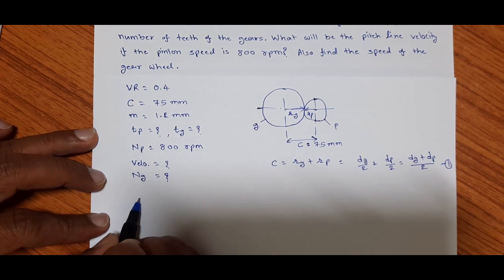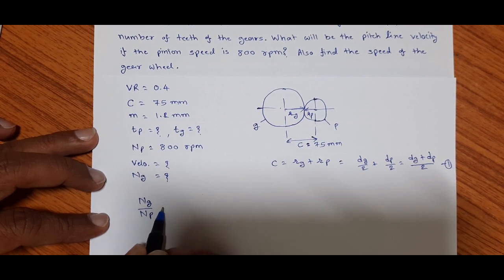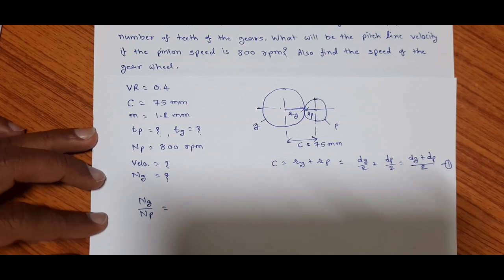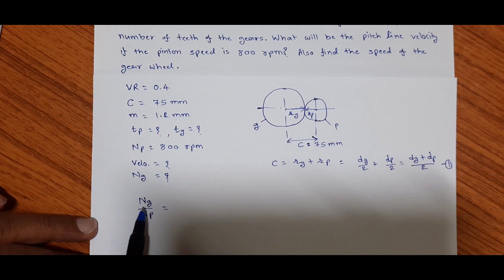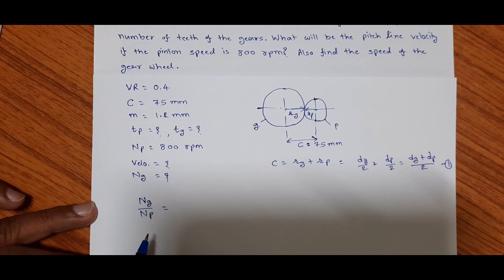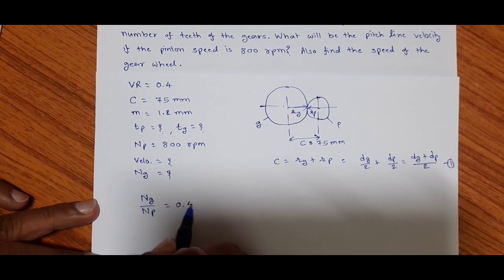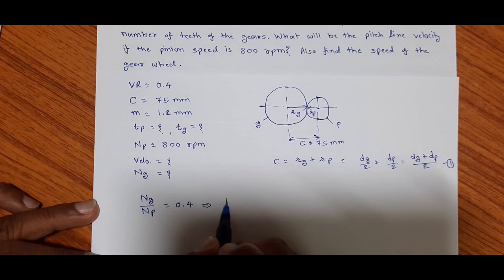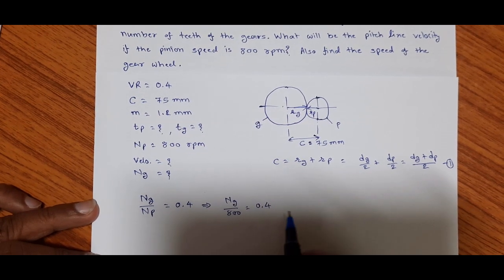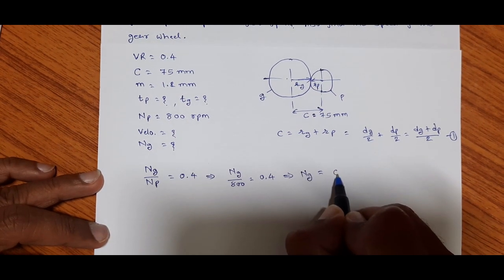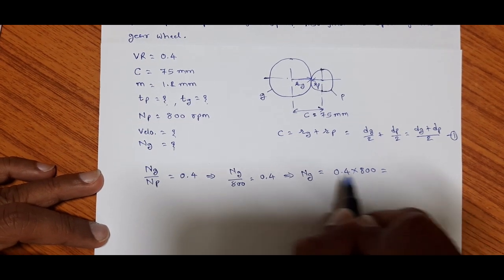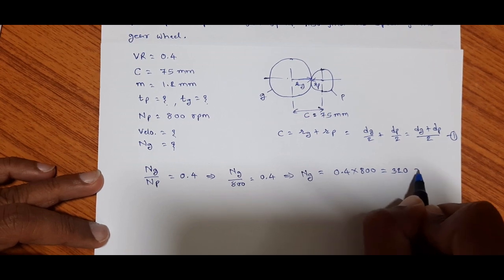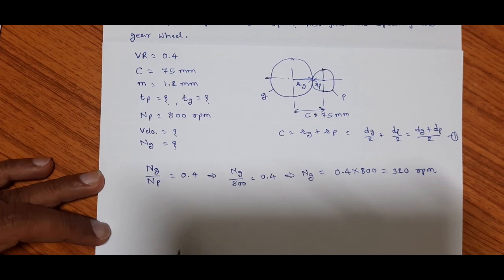The velocity ratio is given as Ng / Np = 0.4, which is the output speed (rpm of gear) divided by the input speed (rpm of pinion). Substituting Np = 800 rpm, we get Ng / 800 = 0.4, which gives Ng = 0.4 × 800 = 320 rpm. This is one of the answers.